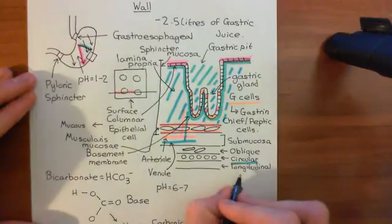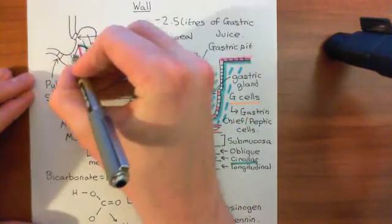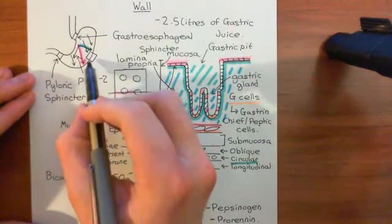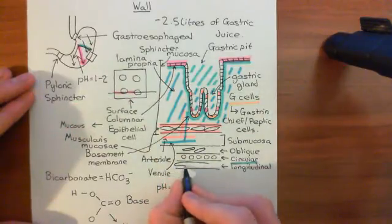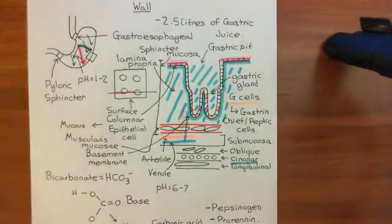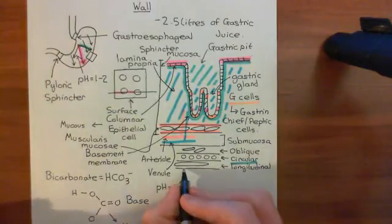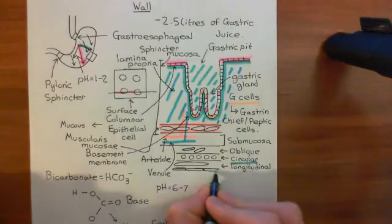Those in the longitudinal layer of smooth muscle will be going down the stomach in a longitudinal direction. When we look at a cross section in this position, they will be completely in the plane, so we'll see their entire length. You'll have these three layers of smooth muscle cells, and then surrounding that, you'll have a final monolayer of cells known as the serosa.